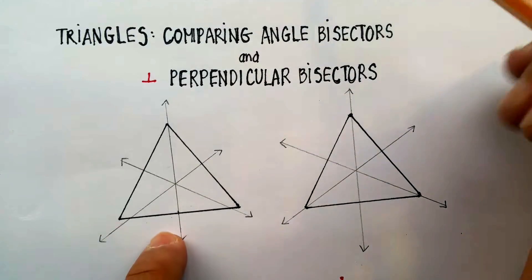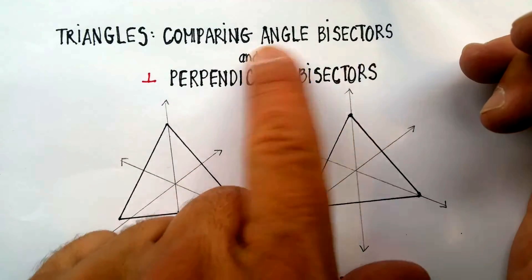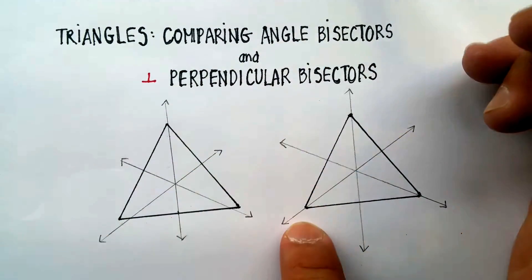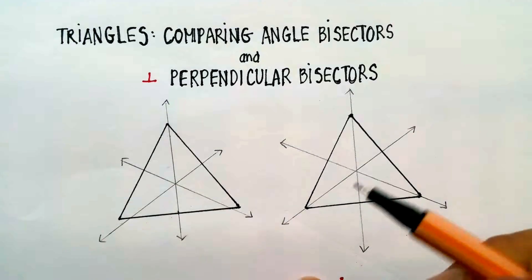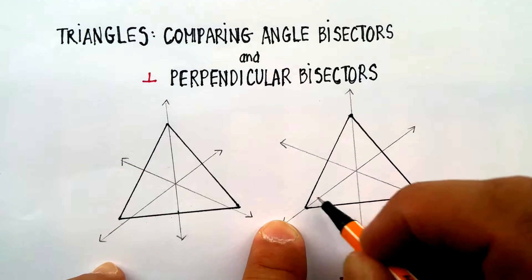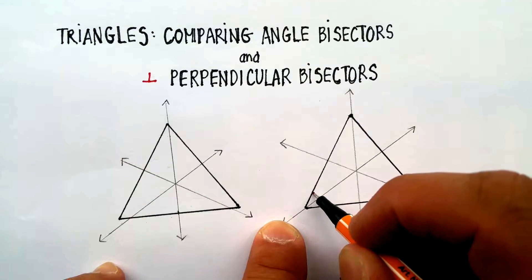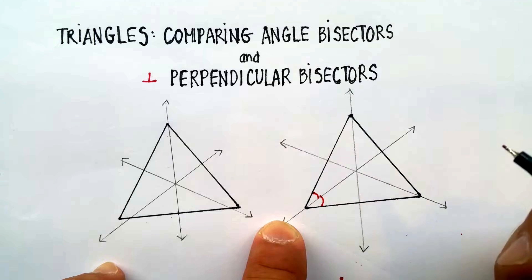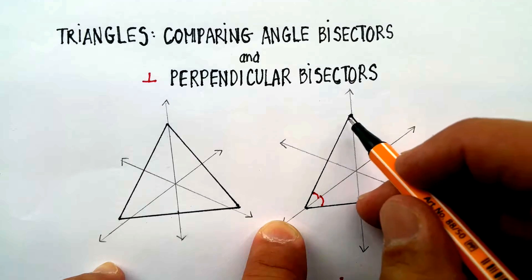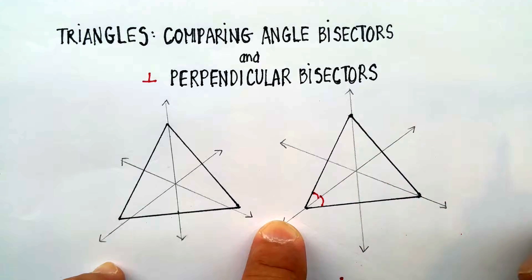So let's start with this side here. Remember that an angle bisector takes an angle and cuts it into two equal halves. So here's my angle right here so that this resulting angle is the same as this resulting angle, and same thing with this one, same thing with this one.